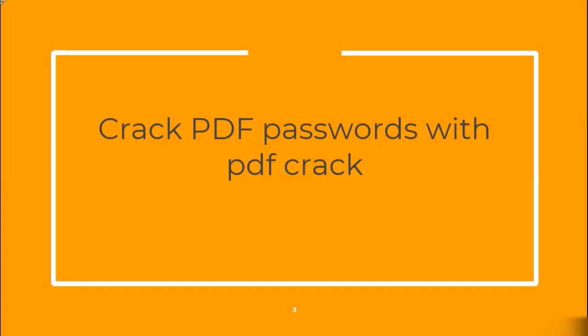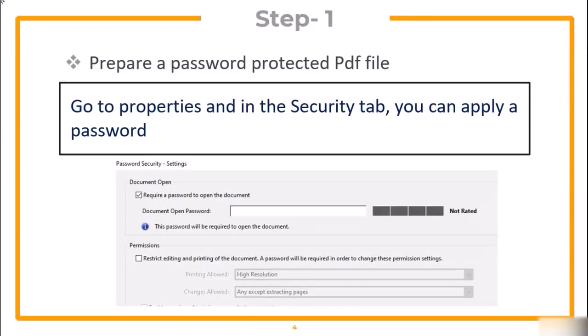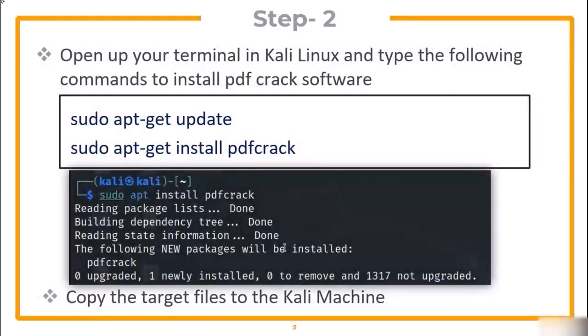Now let's see how to crack PDF passwords. First, you need a password-protected PDF file. If you are using Adobe Acrobat Reader, go to Properties, and in the Security tab, you can apply a password to the file. Then open up your terminal in Kali Linux and type the given commands to install PDF Crack software. Copy the target PDF files to the Kali machine.